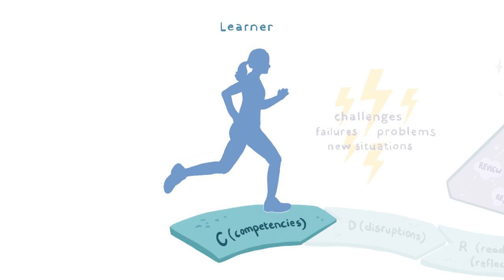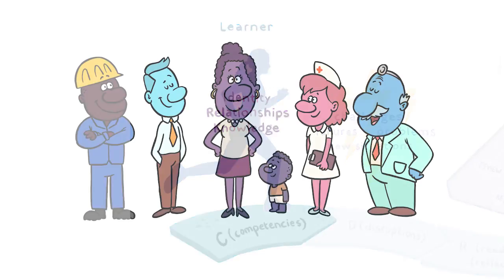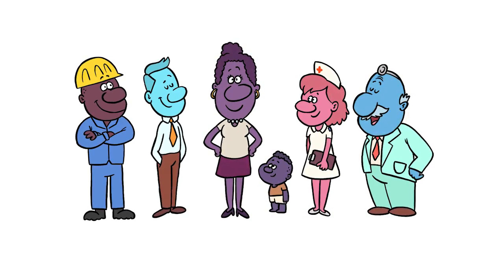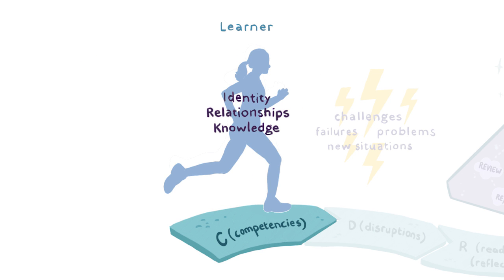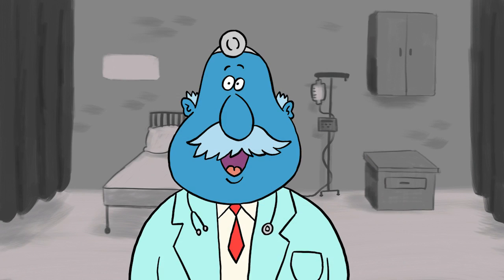The identity and the individual is the first thing. Then the relationships that person has, which make it possible. And then you get to the knowledge and skills, which in another model of learning would be regarded as the most important thing.